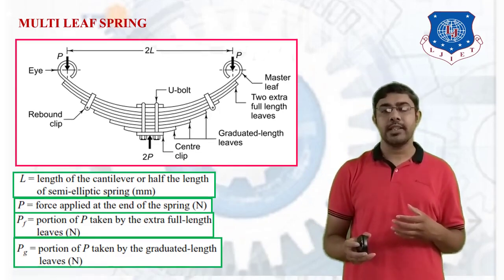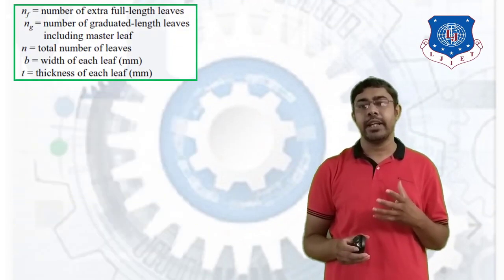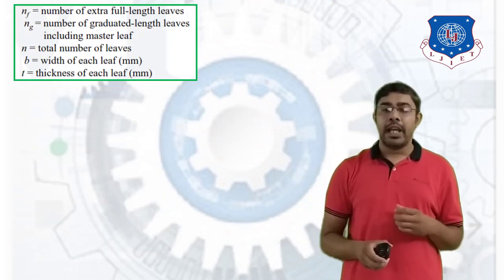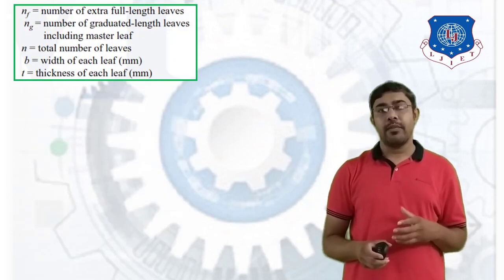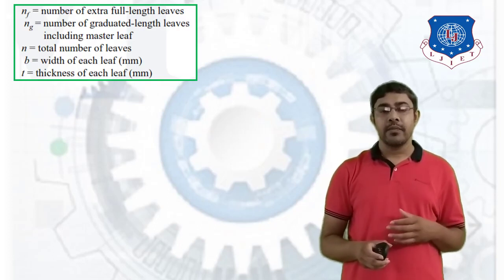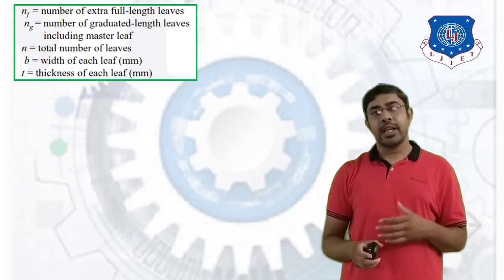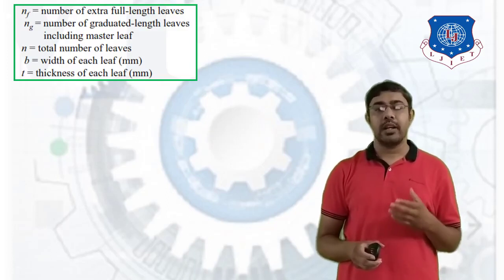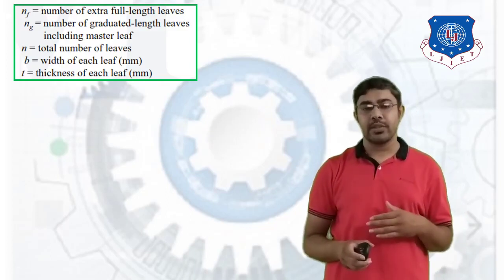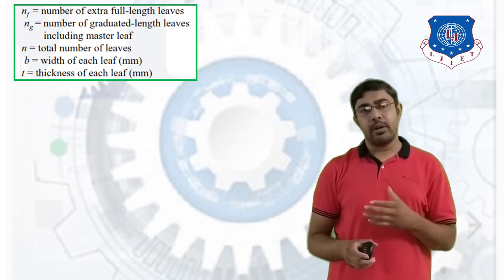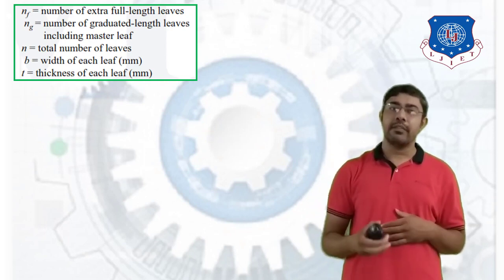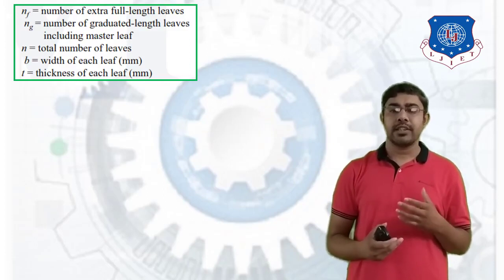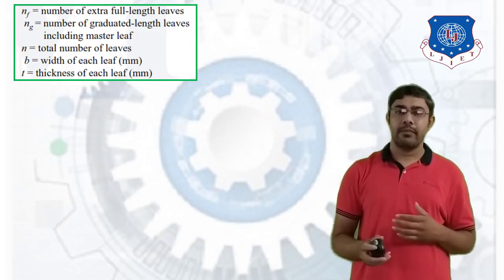Also we consider this nomenclature for the analysis of multi-leaf springs: NF is the number of extra full length leaves, NG is the number of graduated length leaves including the master leaf, N is the total number of leaves, B is the width of each leaf, and T is the thickness of each leaf. All dimensions are in mm.